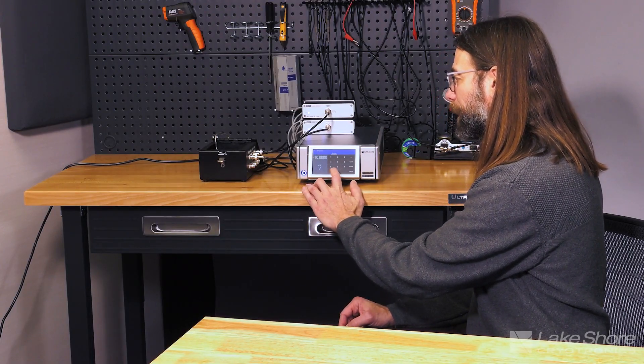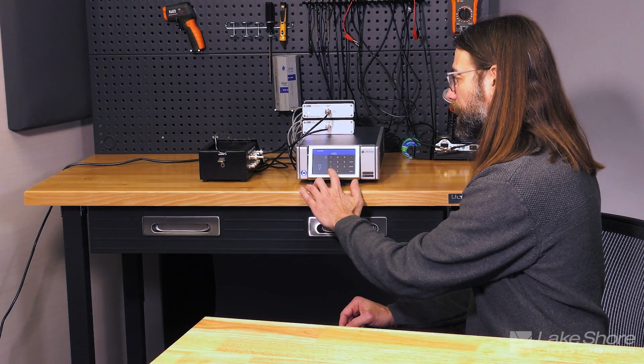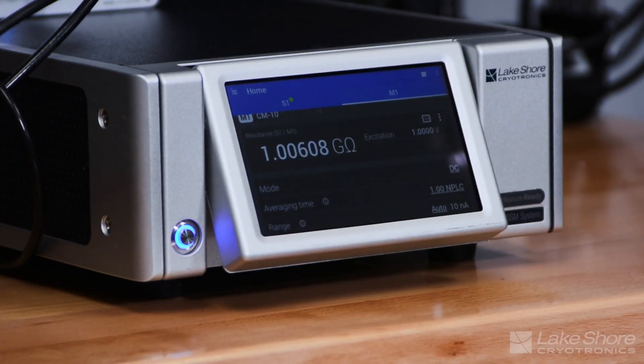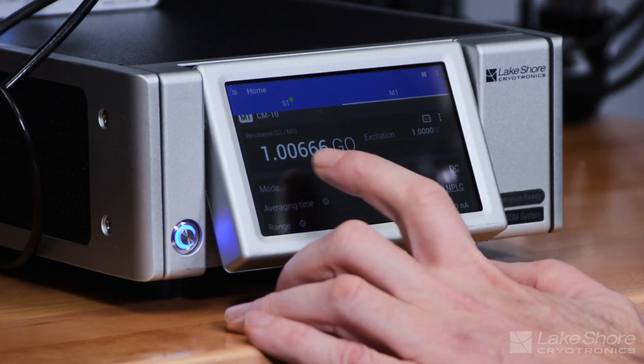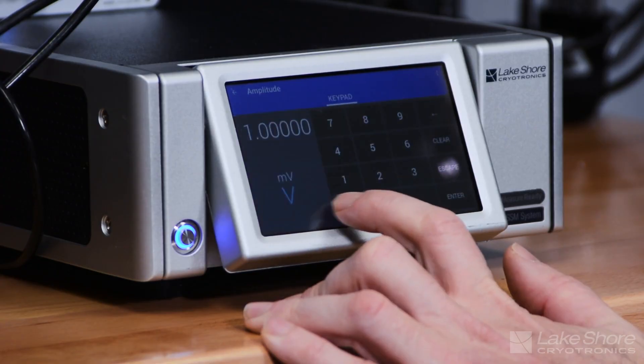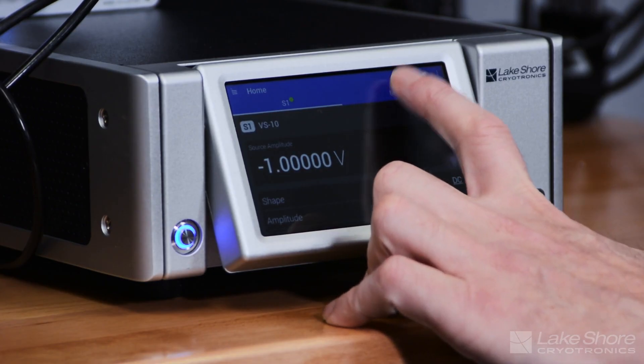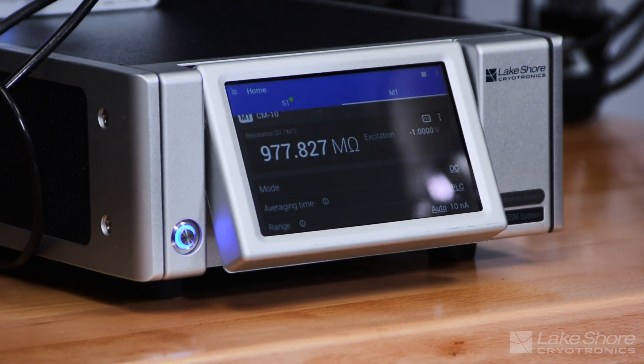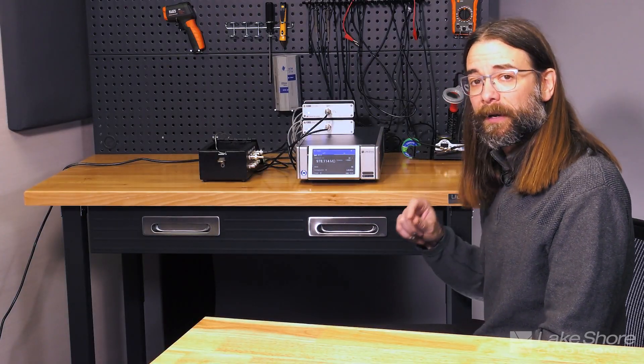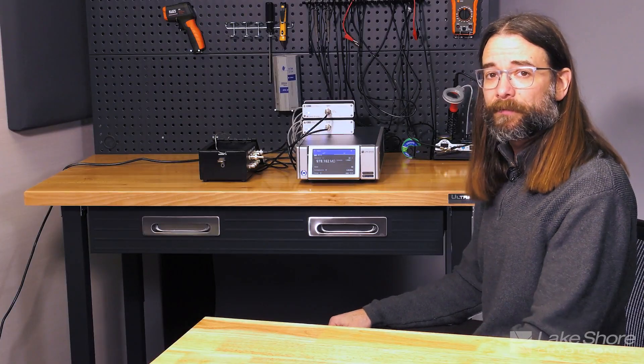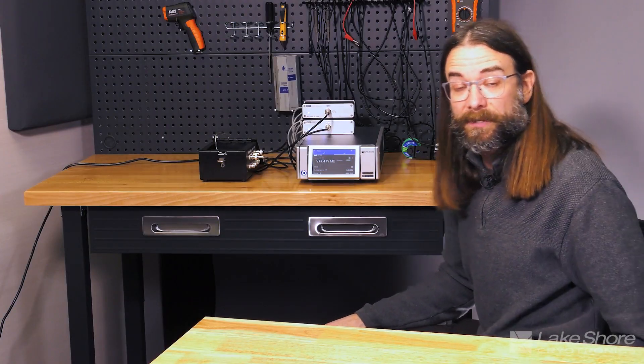So I'm going to go 1 volt DC and now go back over and take a measurement. Now you see I'm measuring 1 gigaohm but if I change that voltage to a minus 1 volt 978 megaohms. So you can see the discrepancy between plus and minus is going to get even greater as we decrease that voltage value. And again the primary reason for that is the offsets for the DC source and the measure.